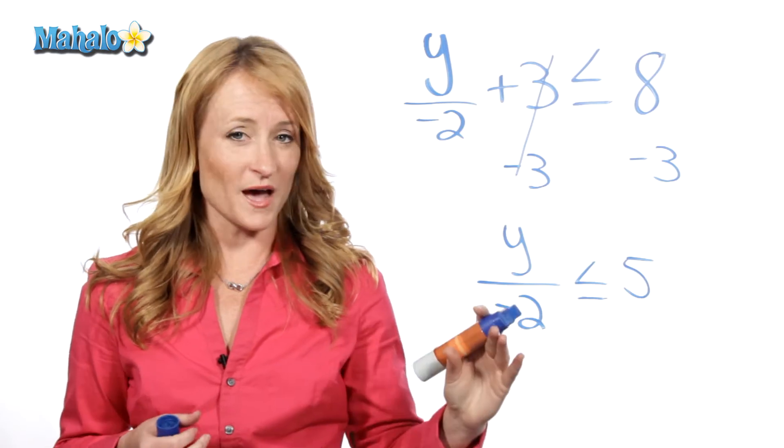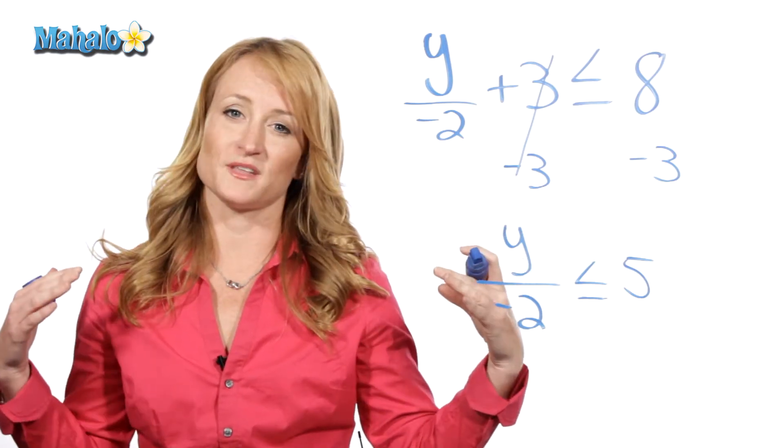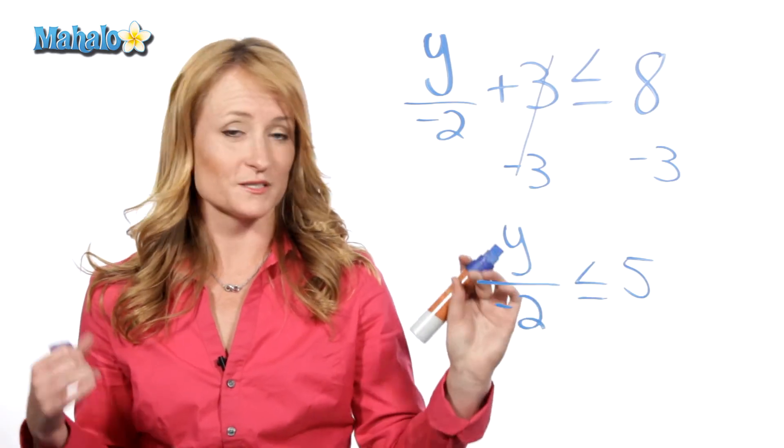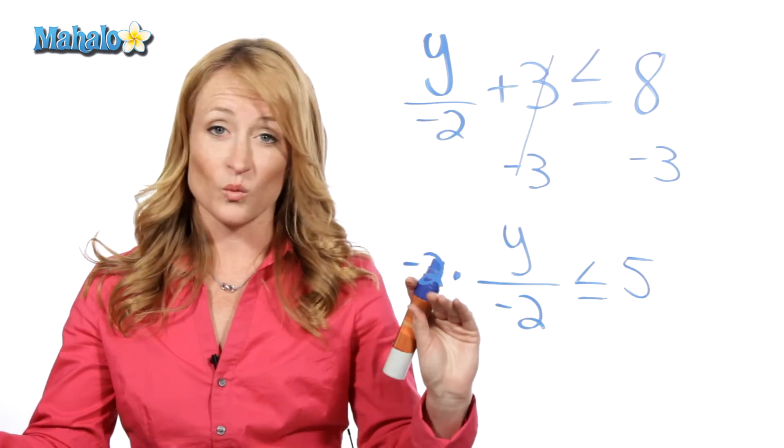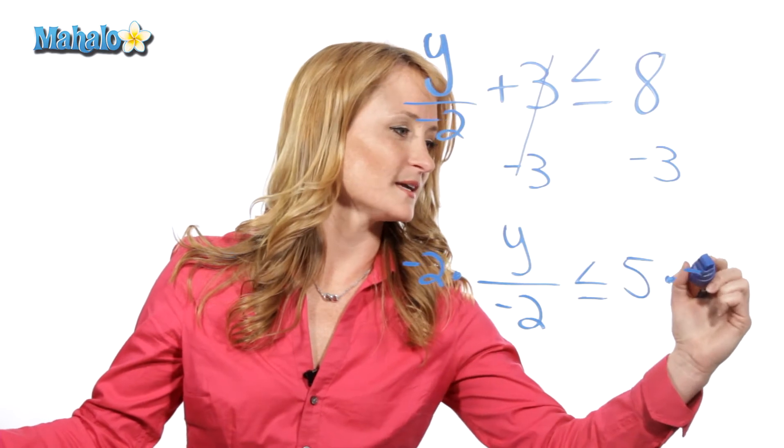Now remember, here's the spot where most people make a mistake. In order to get this y by itself, we have to do the opposite of what's happening. So right now we're dividing by negative 2, so the opposite would be multiplying by negative 2. What you do to one side, you have to do to the other. Multiply by negative 2.